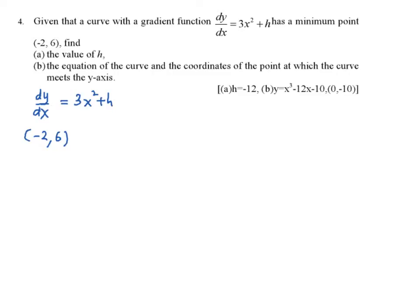So whenever you see the words minimum points or maximum point, this implies dy/dx equal to 0. Meaning, when your x equal to negative 2, dy/dx equal to 0. Why? Look at the minimum point here. This is the minimum point here. So the gradient at this point always equal to 0.